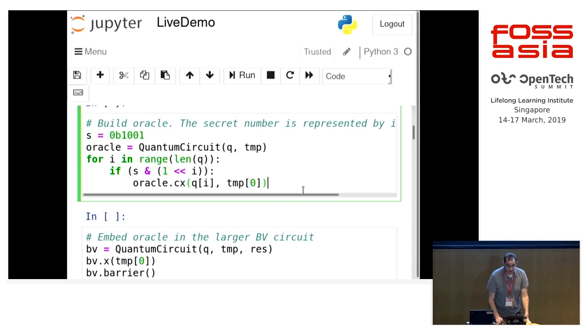Then we build our Oracle function, and I'm just using a for loop here for brevity, where we just loop over our secret, which is one, zero, zero, one. You can put any value there or an integer. And we just loop over it, and when there's a one, we apply a CNOT gate, which is CX in the Python code, on our bits. And we build an Oracle function with that.